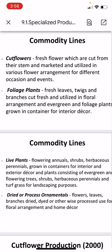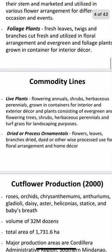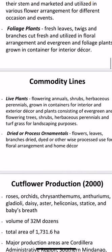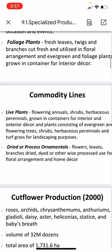Ornamental production is divided into different commodity lines. We have cut flowers or fresh flowers which are cut from their stem and marketed and utilized in various flower arrangements for different occasions and events. We also have foliage flowers or plants, which are fresh twigs and branches cut and utilized in floral arrangements, and evergreen foliage plants grown in containers for interior decor.